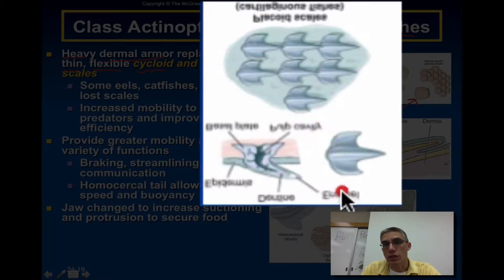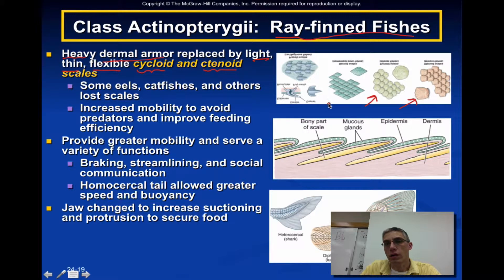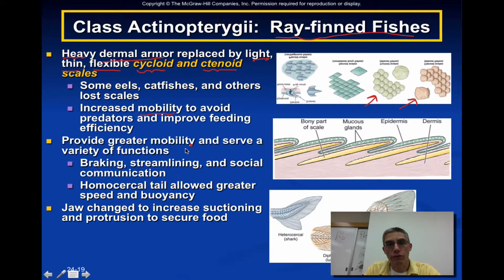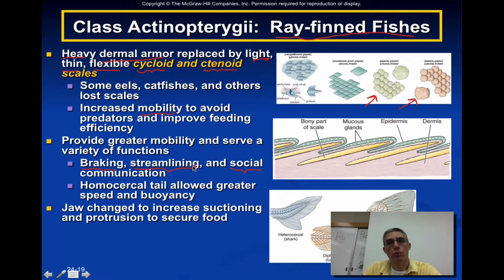This diagram is interesting for comparing all the different scale types found in fish. When you think about the rayfin fishes, the way these fishes have evolved has definitely worked to increase their mobility, which allows them to evade predators and has improved their feeding efficiency. This increase in mobility allows the animal to be better at braking, better at streamlining through the environment, and many fish also use their fins in various ways to communicate socially — usually in response to territorial or reproductive behavior.